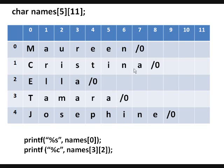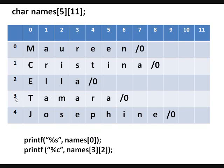Supposing I want to display the string 'marine': I'll use index zero with printf and supply '%s' as the format specifier, and it will display the string 'marine'. And if I want to display the character 'm' in 'Tamara', I supply the correct pair of indices — the first index would be index three as the row index, and the second index would be index two for the column index, and it will display the small letter 'm'.